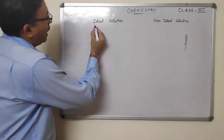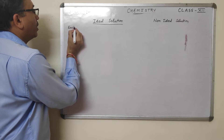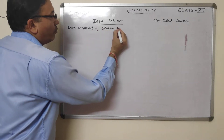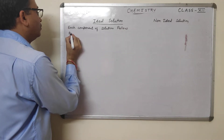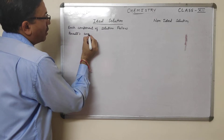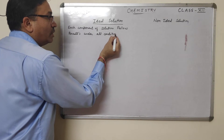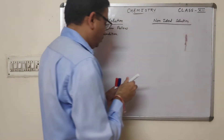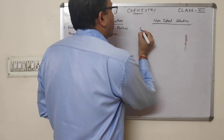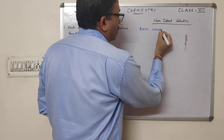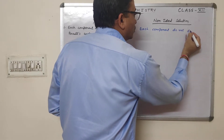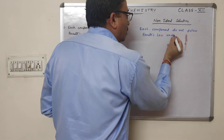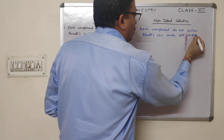In case of an ideal solution, each component of the solution follows Raoult's law under all conditions — all conditions meaning all temperatures and concentrations. Whereas in case of a non-ideal solution, each component does not follow Raoult's law under all conditions.